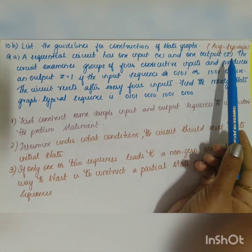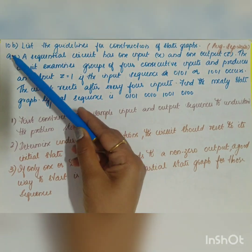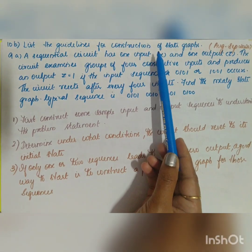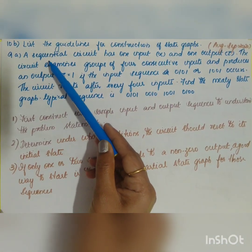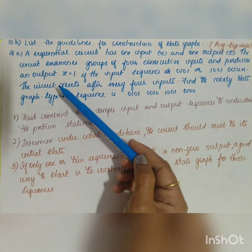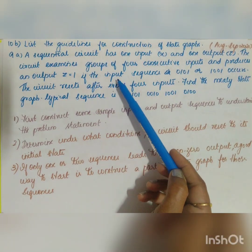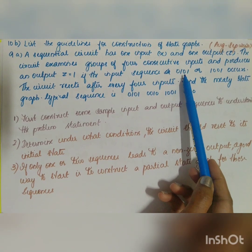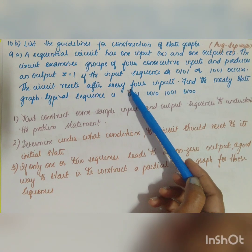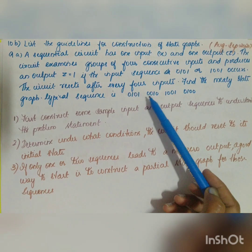In the August/September 2020 question paper, two questions were asked. Question 10B asked to list the guidelines for construction of state graphs. Question 9A gave a problem: a sequential circuit has one input x and one output z. The circuit examines groups of four consecutive inputs and produces output z=1 if the input sequence 0101 or 1001 occurs. The circuit resets after every four inputs. Find the Mealy state graph.